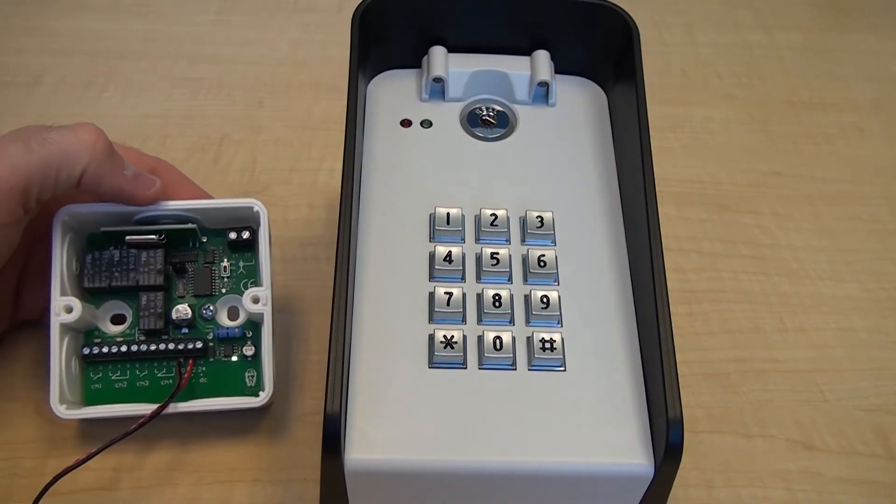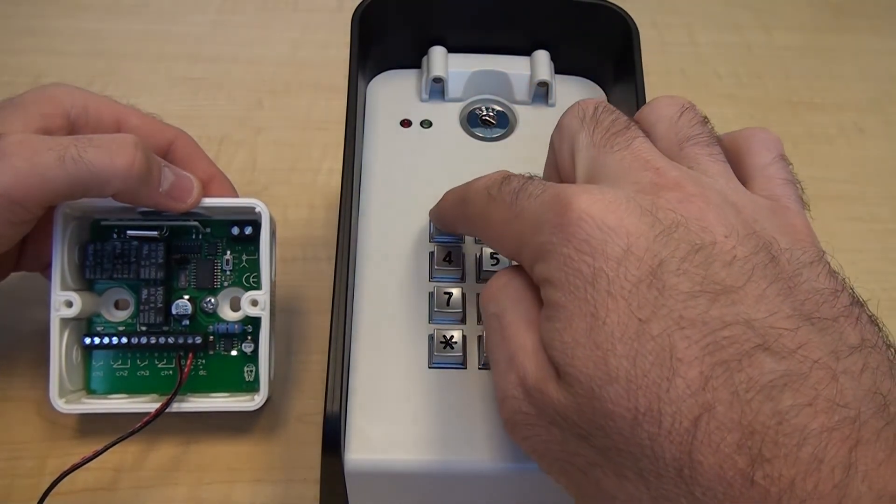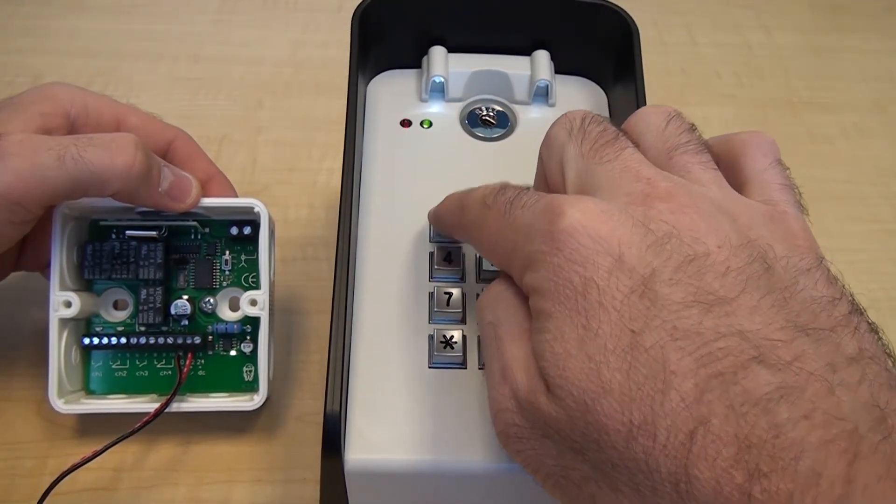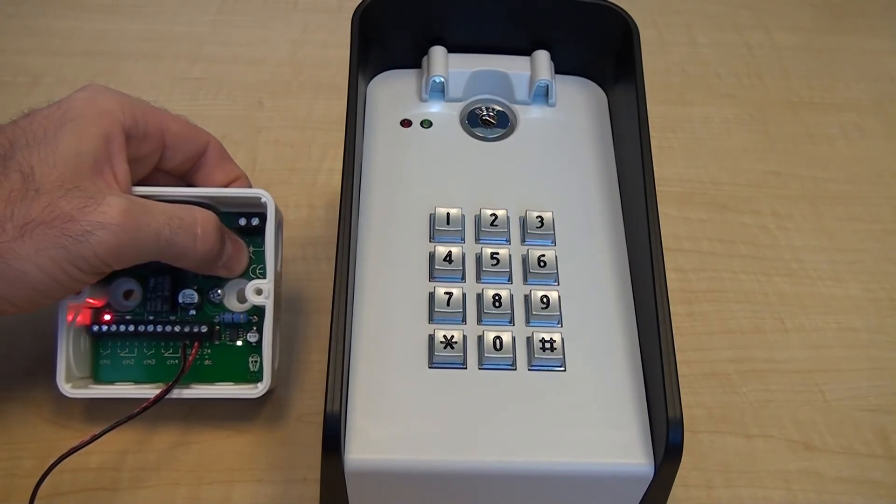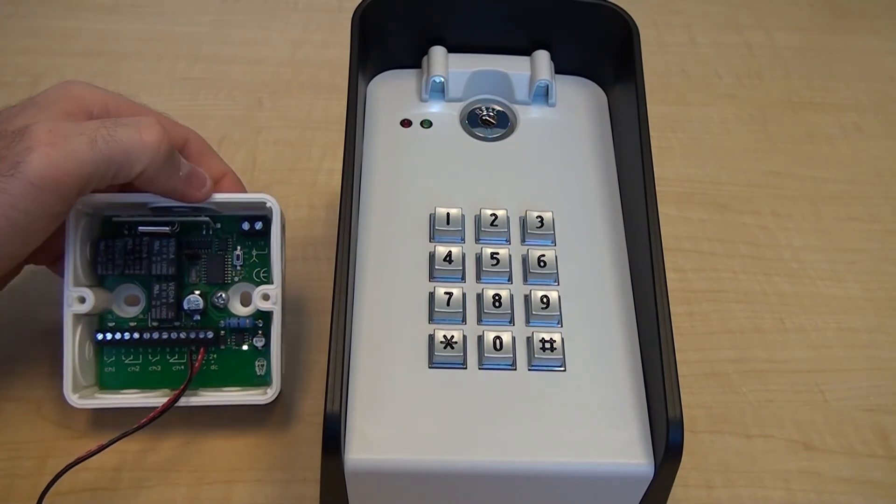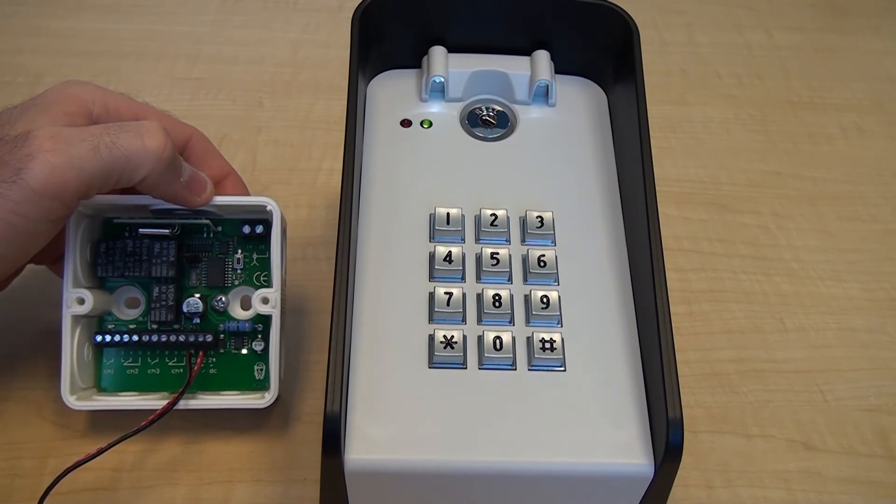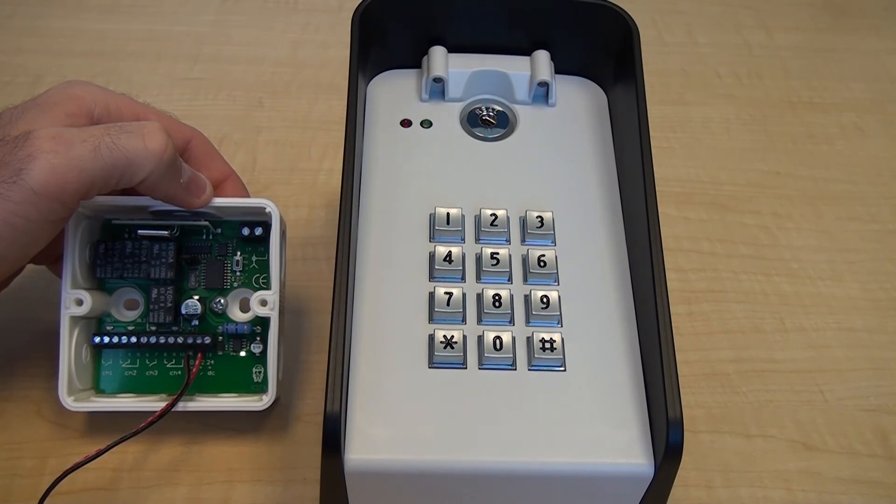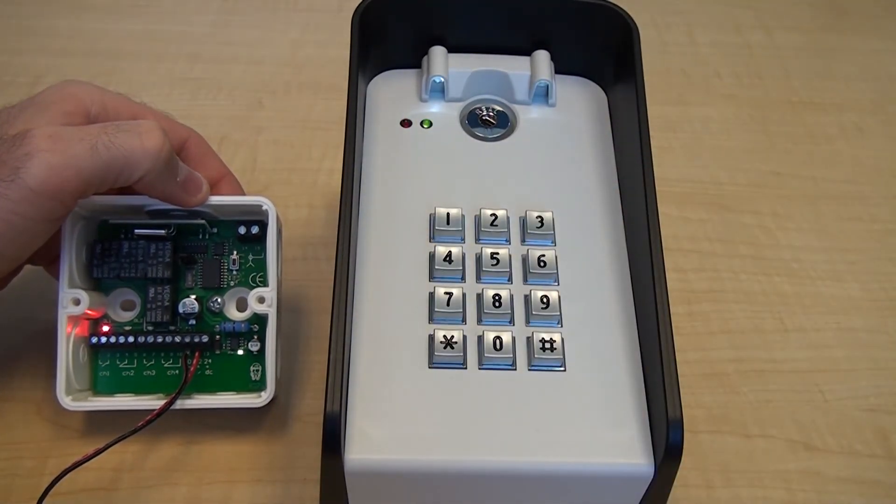To program the keypad to an external receiver, outside of programming mode, input any active code into the keypad. Press the learn button on the receiver to sync the two devices. You can then test the receiver by inputting any active code.